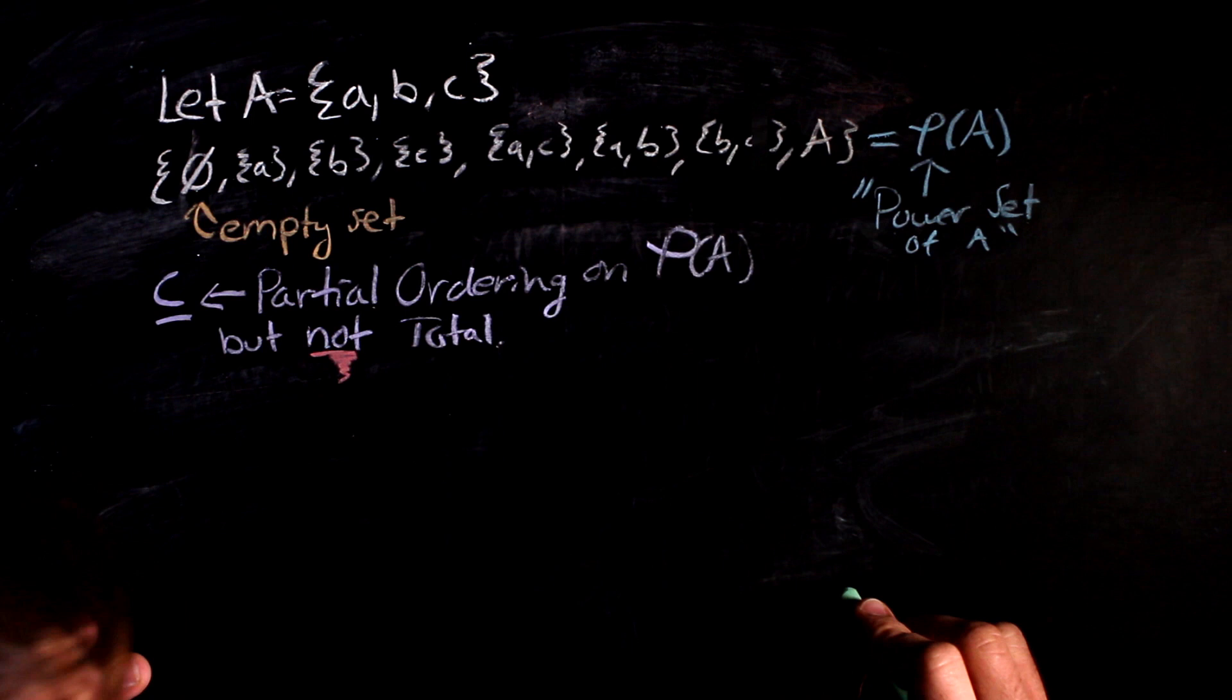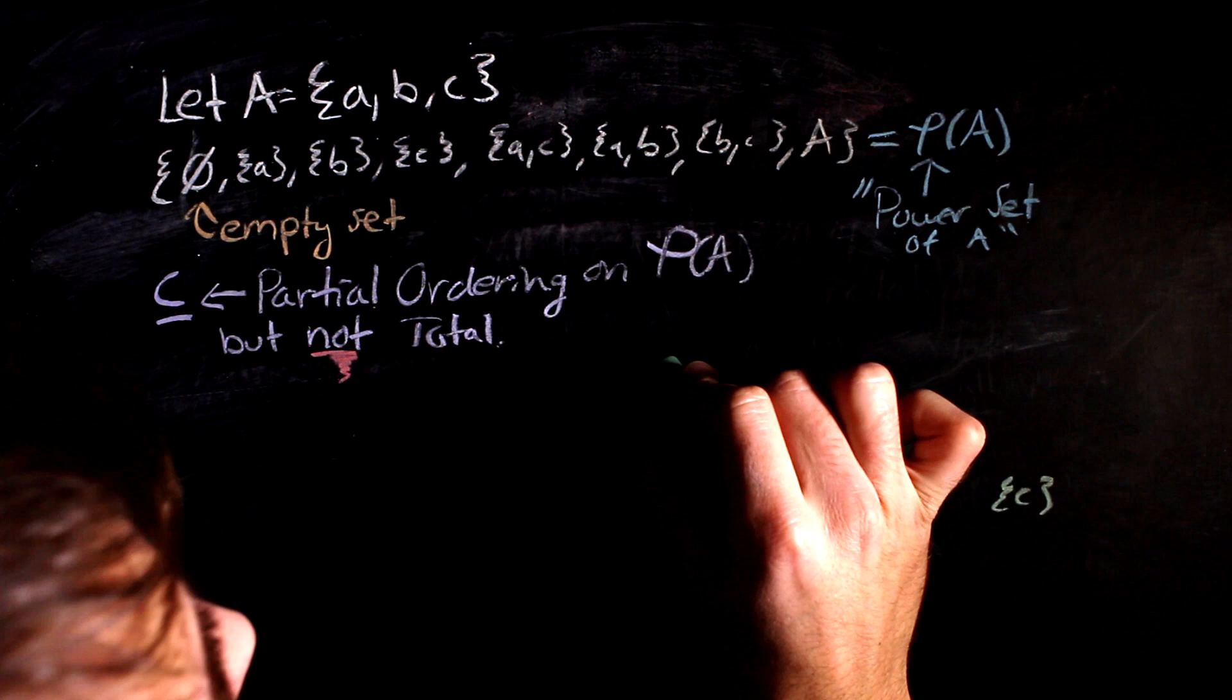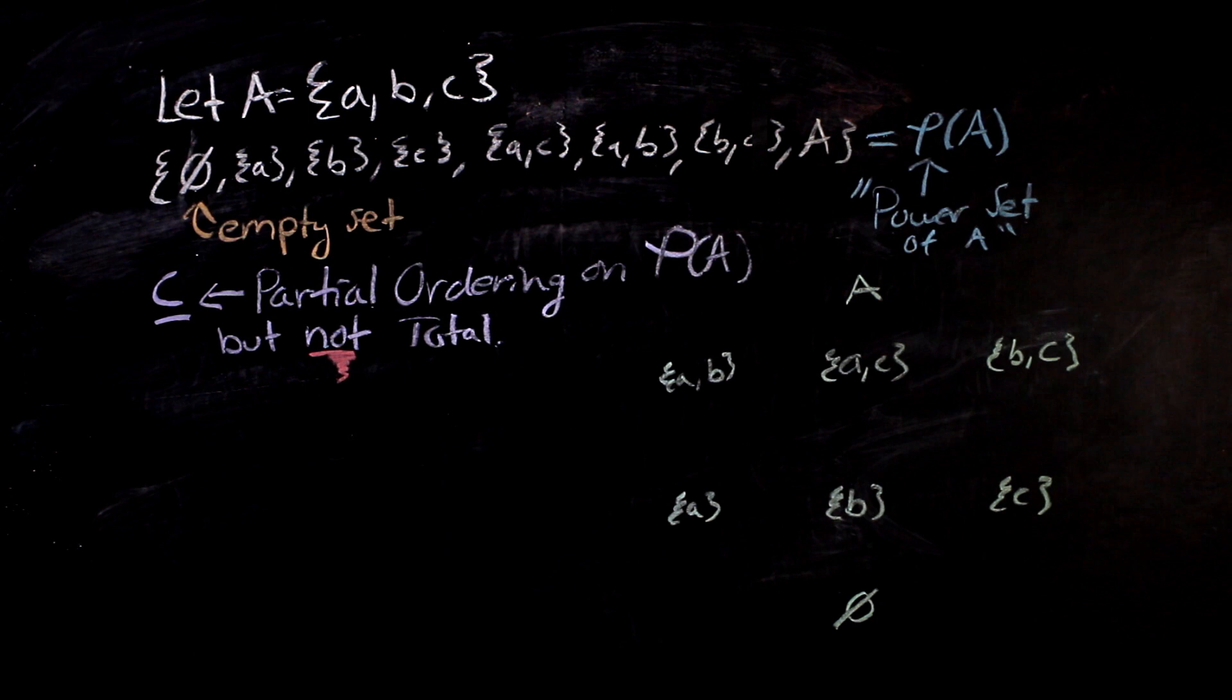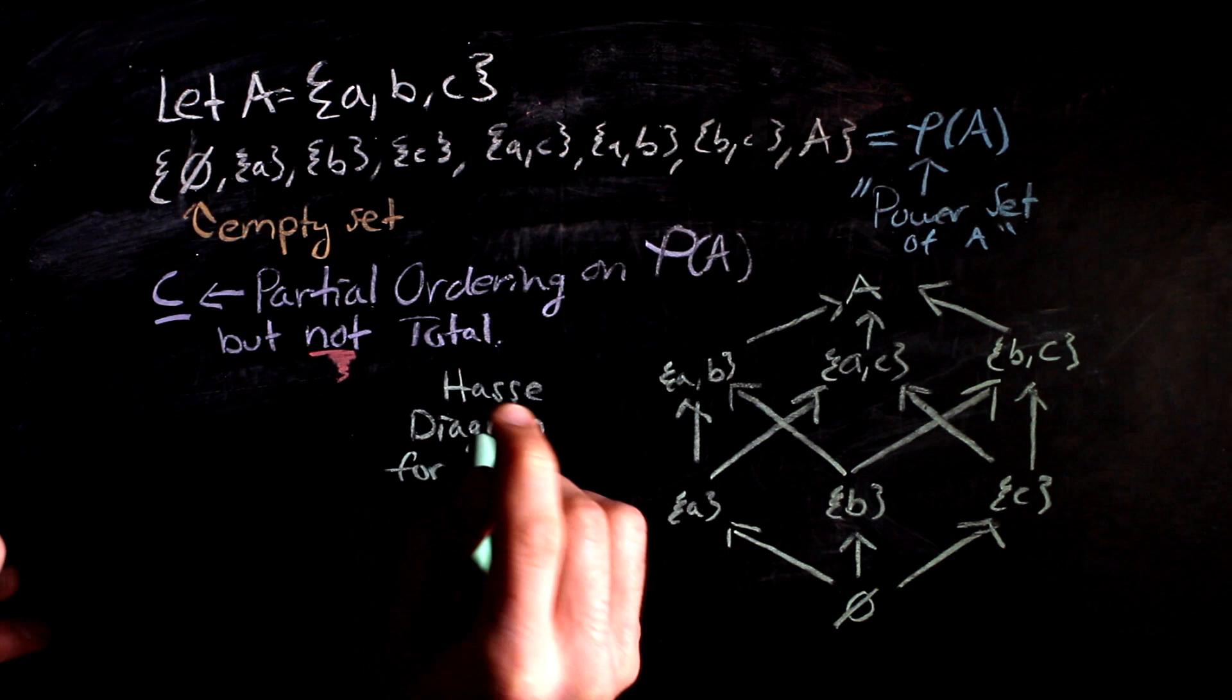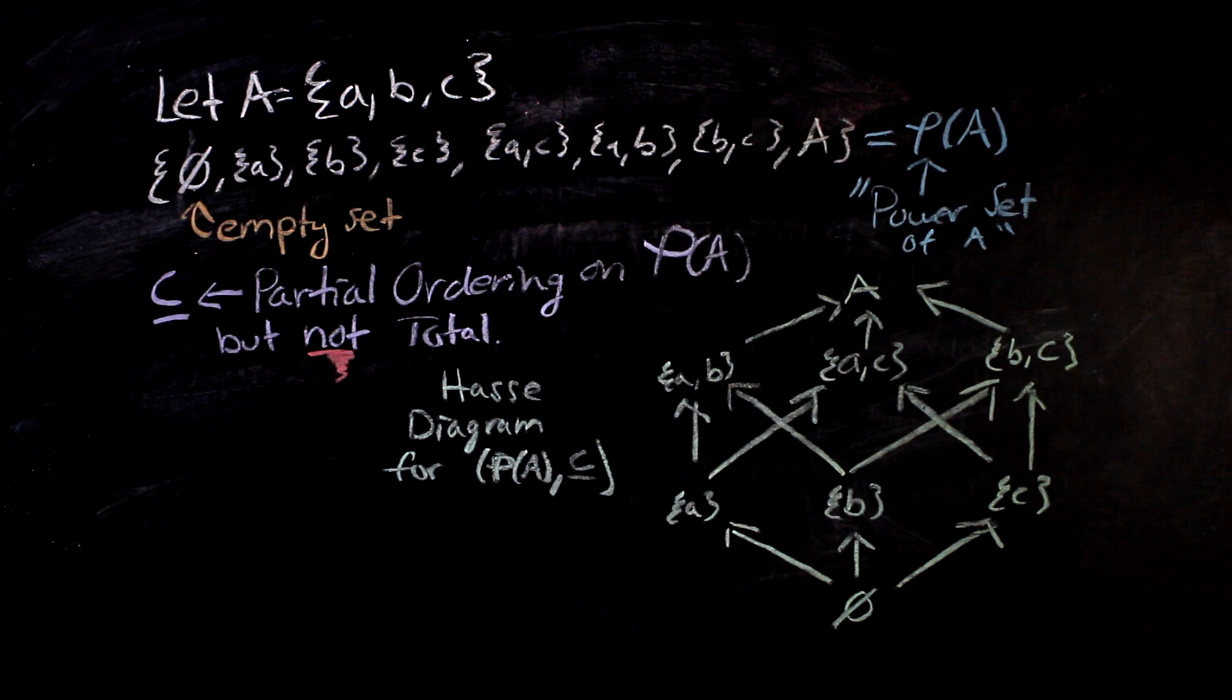To show that it's a partial ordering, we can just draw what is called a Hasse diagram. A Hasse diagram is a directed graph where each element of our set is a vertex, and an edge goes from an element X to an element Y if X is related to Y, and there's nothing Z that can be placed between the relation of X and Y. Every path that obeys the direction of the edges gives a totally ordered subset of our set, known as a chain.